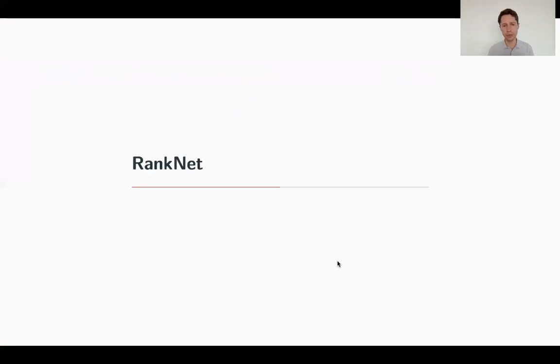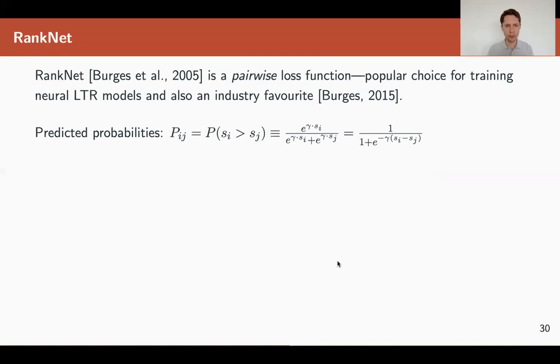This approach, introduced in 2005, works with probabilities that document i is ranked higher than document j. That probability is calculated using a softmax between two scores. We predict si using our model f applied to vector xi, and sj from vector xj. But we also know the desired probabilities from our judgments—we asked our annotators to provide the real probabilities.